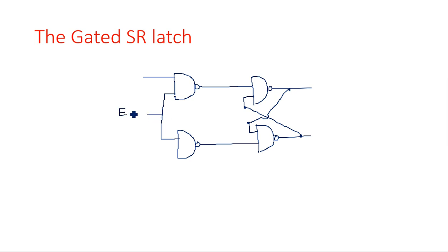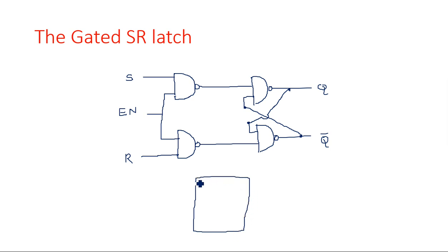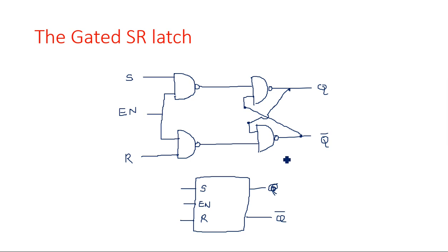This is the place where we apply enable input, or it may be a clock input, depending upon the type — whether it is a latch or flip-flop. We have S, R, and Q and Q-bar. Simply we can draw this as a block: S and R with enable at the center. This is the enable pin, this is S, this is R, this is Q and Q-bar.